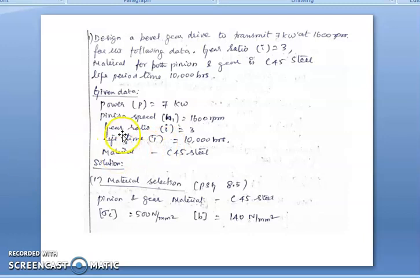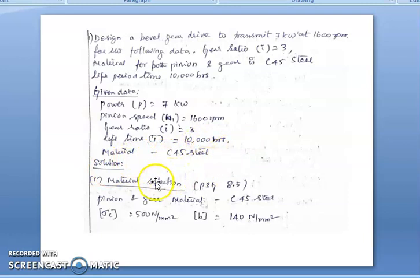First, write the given data: power P = 7 kW, pinion speed n1 = 1600 rpm, gear ratio i = 3. Using the gear ratio relation i = n1/n2, we can find n2. Lifetime period is 10,000 hours for factor selection. Material is C45 steel. As in spur and helical gear design, the first step is material selection. From page 8.5, for C45 steel, σ_c = 500 N/mm² and σ_b = 140 N/mm².